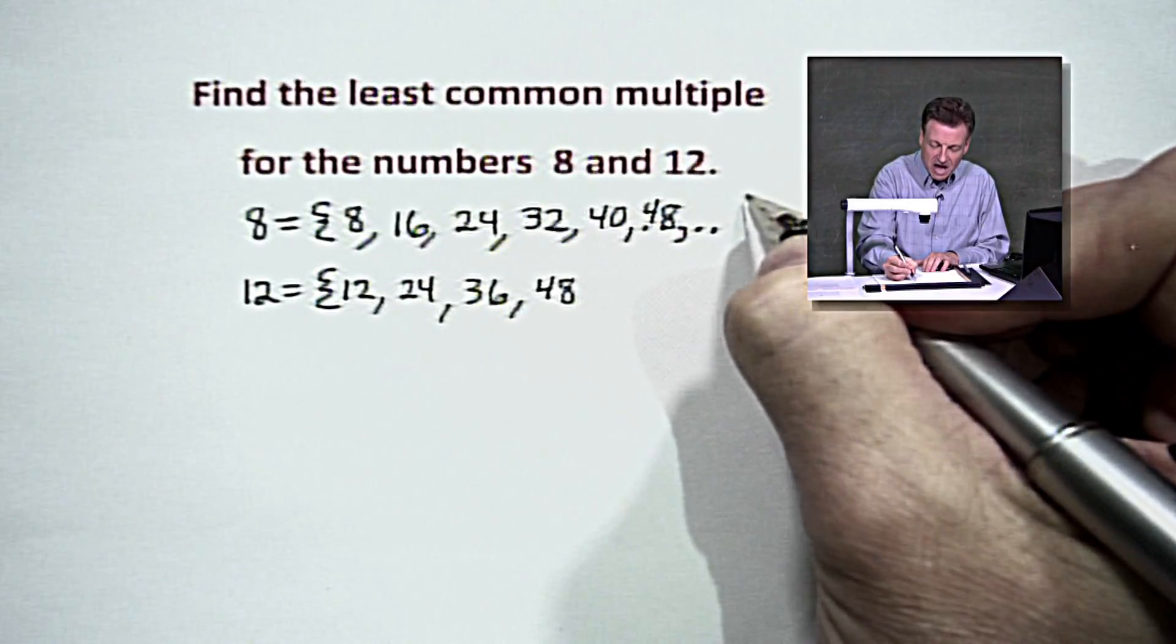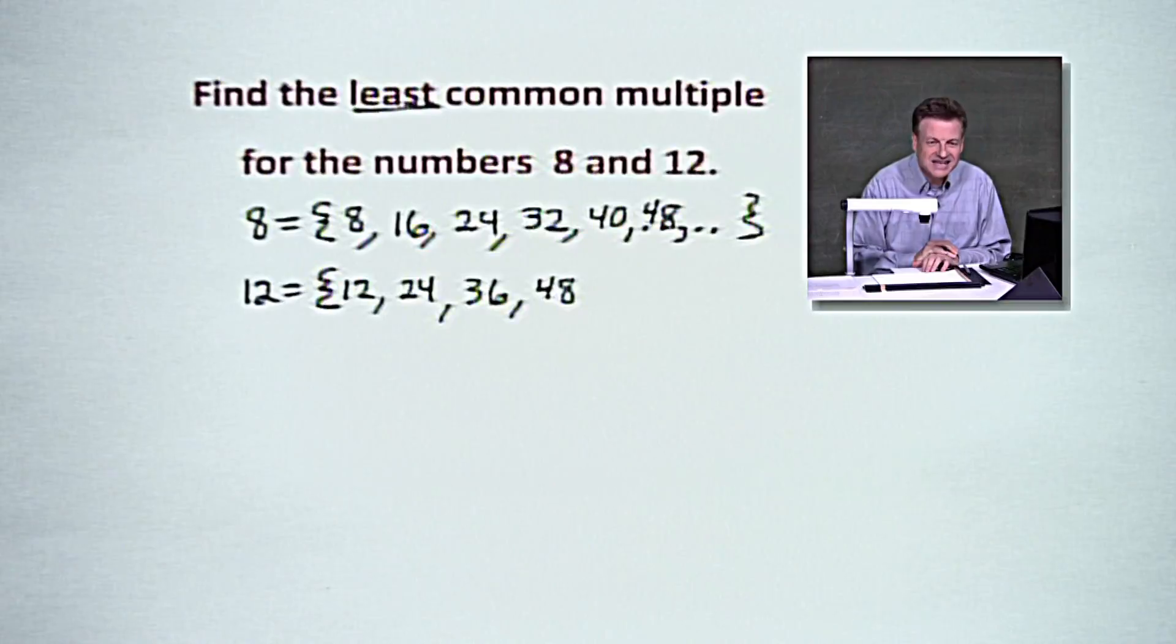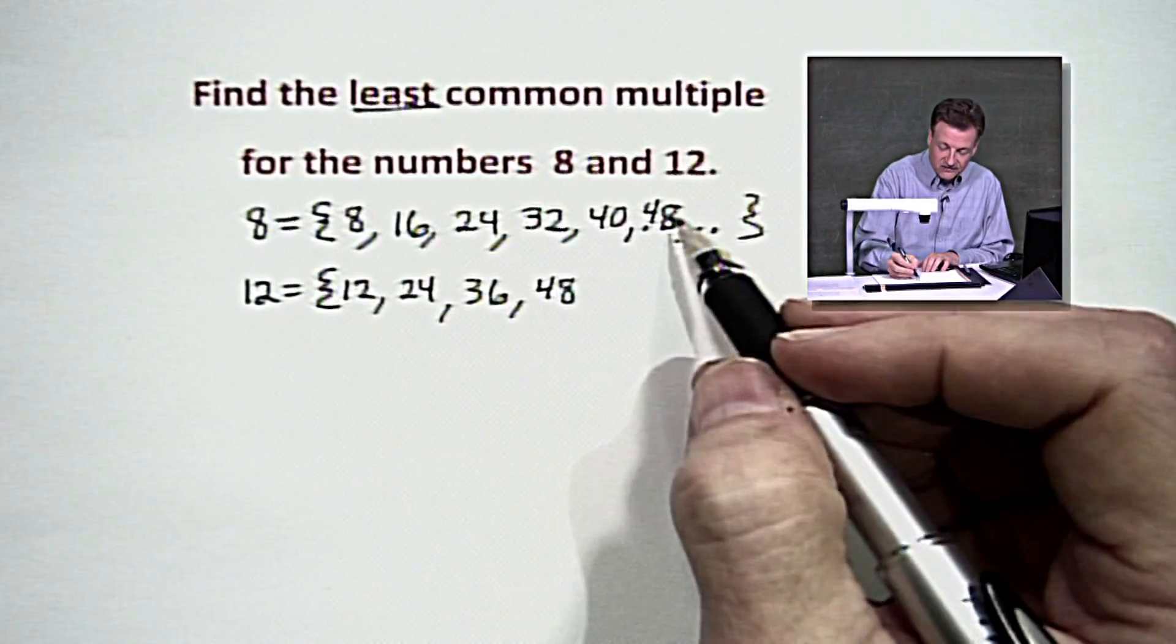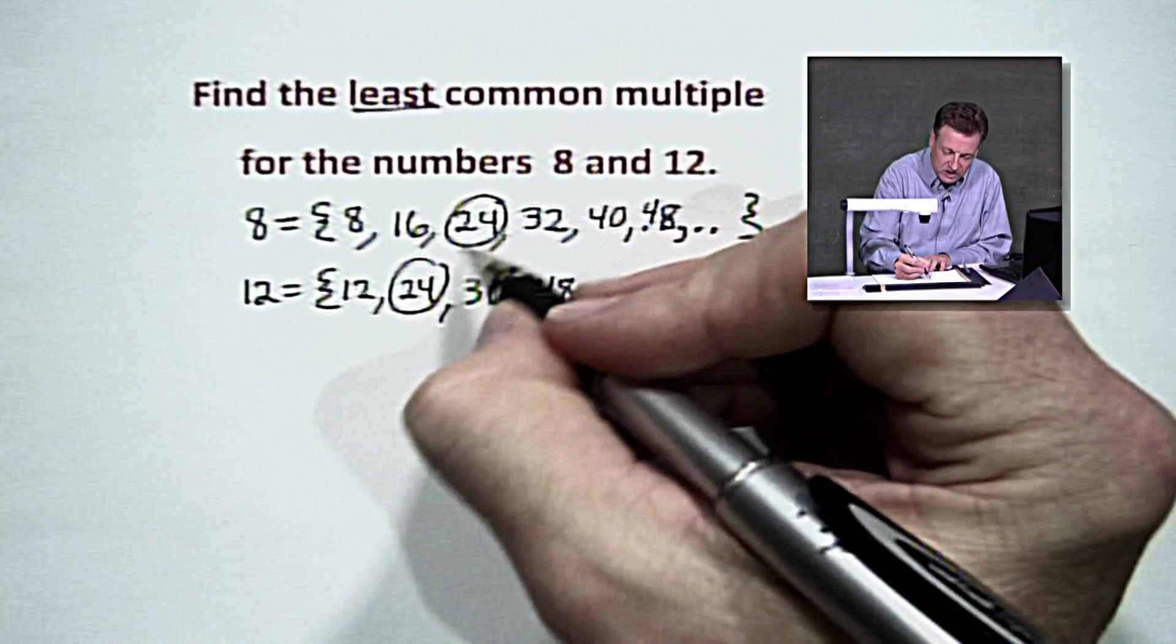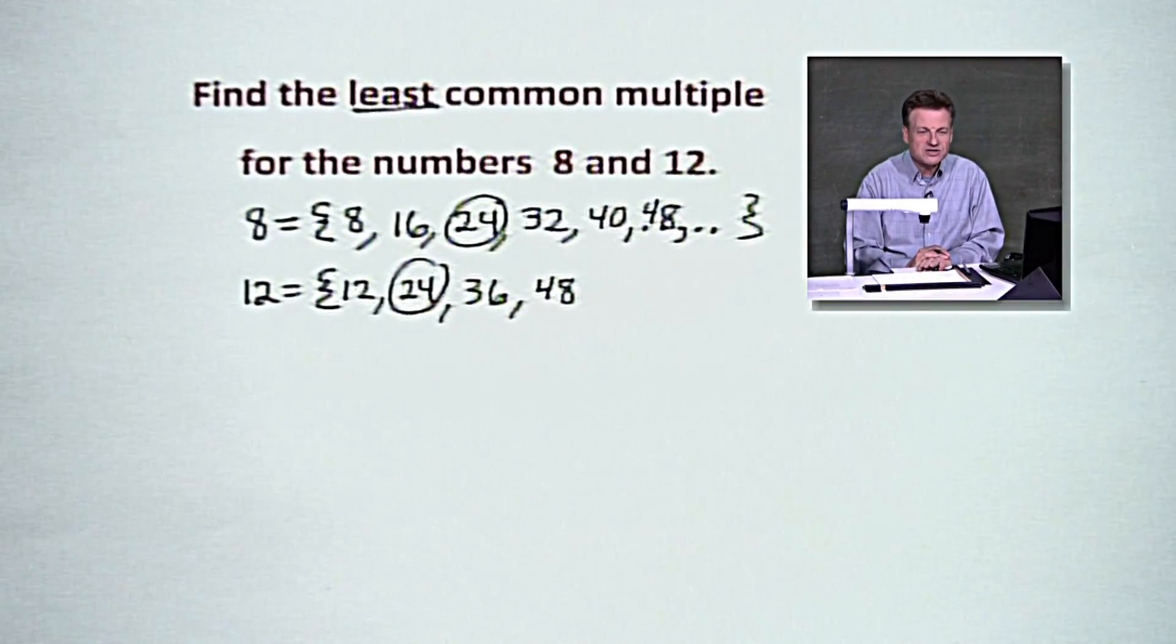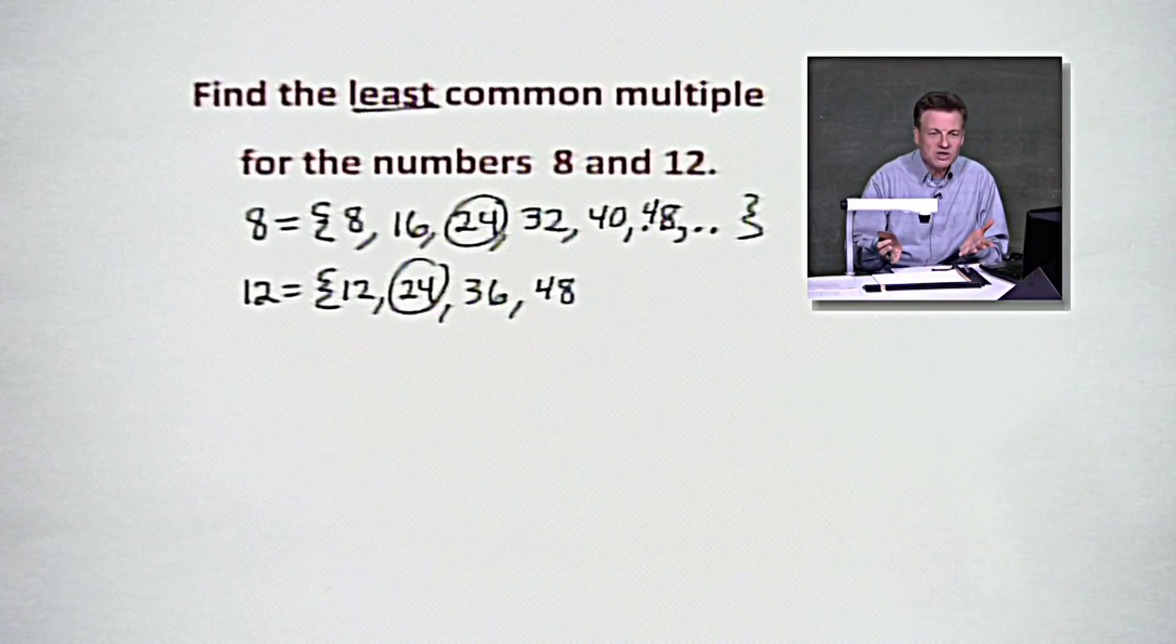And you know what? There would be another common multiple. But what are we looking for? Folks, we're looking for the least. So we've got a 48 and 48 there. But our cross happens way back here. Go with the 24 and 24. That is your smallest situation. You say, Ernie, when do we use those kind of things?